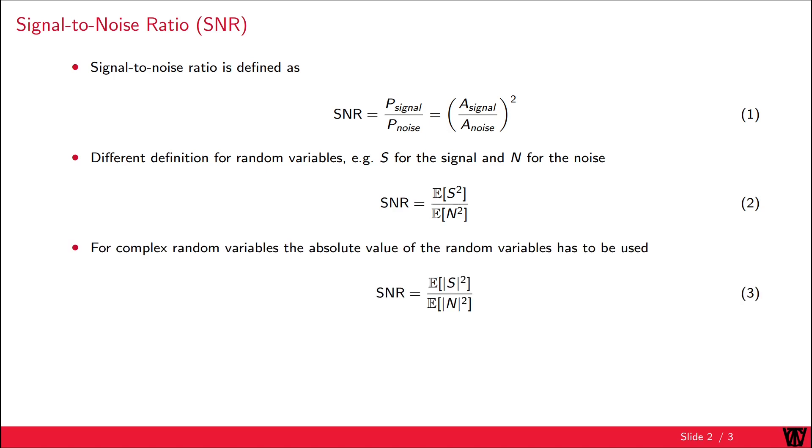For complex random variables, for example the complex channel, the absolute value of the random variables has to be used.